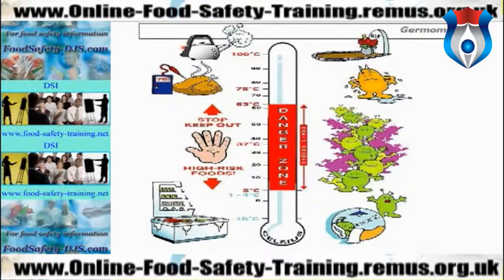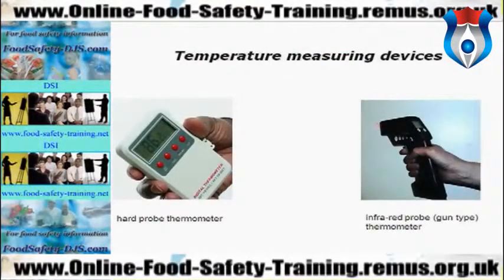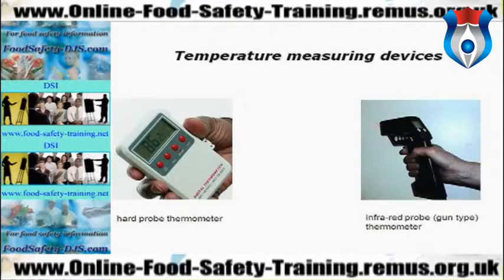All food must be cooked to a core temperature of 75 degrees Celsius for it to be safe — at that temperature all bacteria are killed. The only way to check that food has been heated to 75 degrees Celsius is by using a temperature measuring device. The most commonly used is a thermocouple probe thermometer, which has an attachment you insert into the core — the thickest part of the food. Beware of infrared probes as they only register surface temperature. The hard probe thermometer can be calibrated and is tip sensitive.